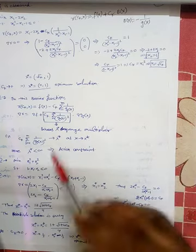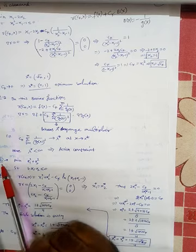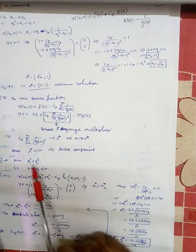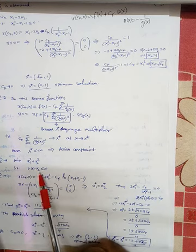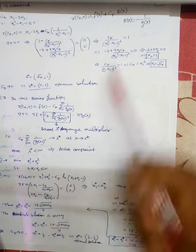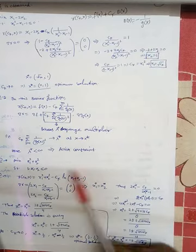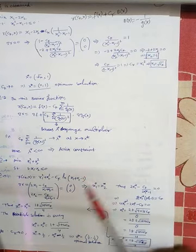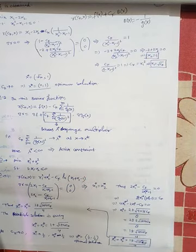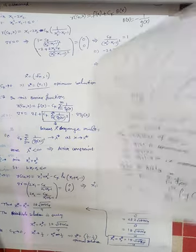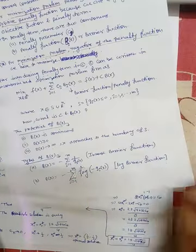Now for the geometrical and physical meaning — Example 3: minimize (x_1² + x_2²) subject to 1 − x_1 − x_2 ≤ 0. Here we use the log barrier function.